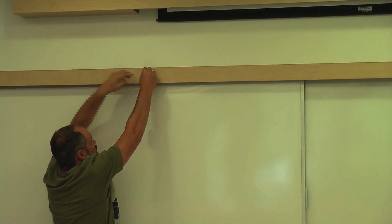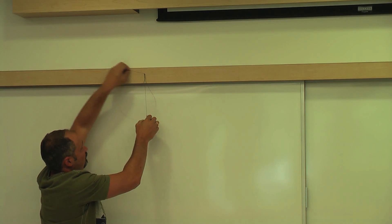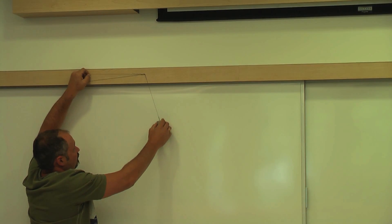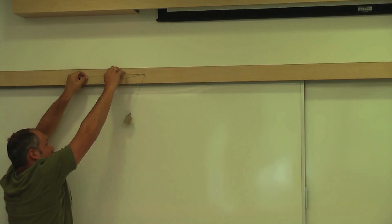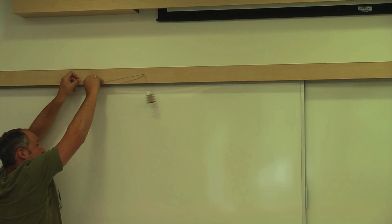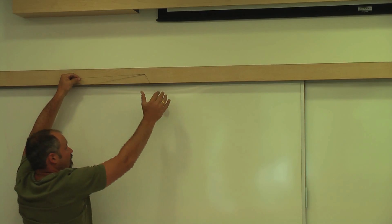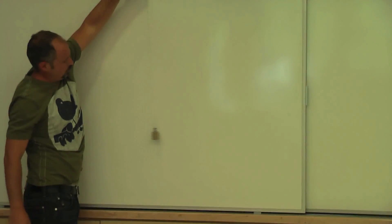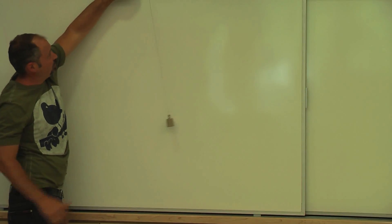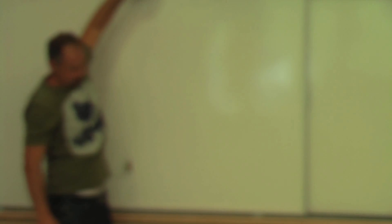And if I shorten it even more, let's get the string out of the way. You can see it's going even faster. And the shorter the string, the shorter the period. The longer the string, the longer the period. So we know that the period of a pendulum depends on its length.